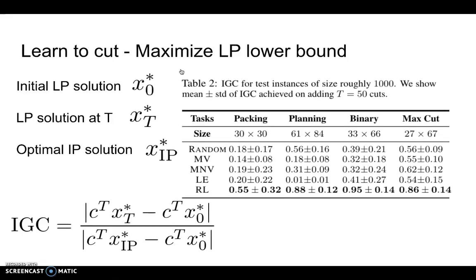Now we look at the problem of maximizing the LP lower bound. The metric that we use to evaluate the performance of cutting planes is called IGC, or Integrality Gap Closure. It is used for evaluating the performance of cutting plane algorithms, given the budget constraint on the number of cutting planes they can use in a system. The table here shows the mean and standard deviation of IGC evaluated on the testing sets of all different heuristics, including the RL heuristics and across different types of problems. We see the RL performs better, and significantly better than the other heuristics.